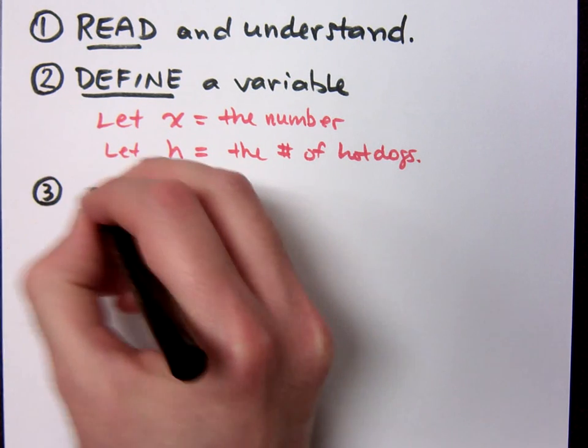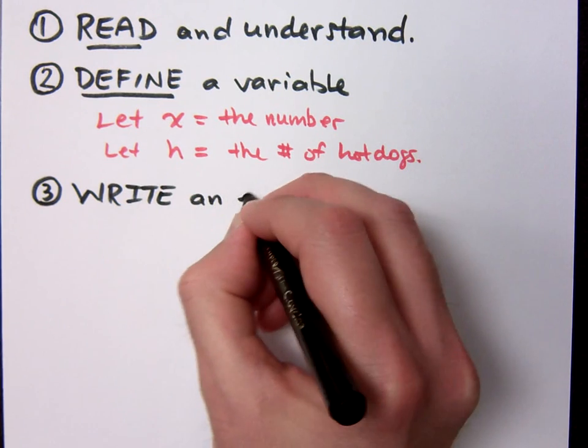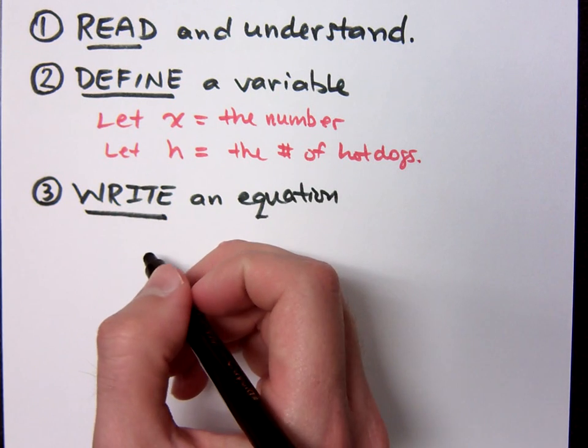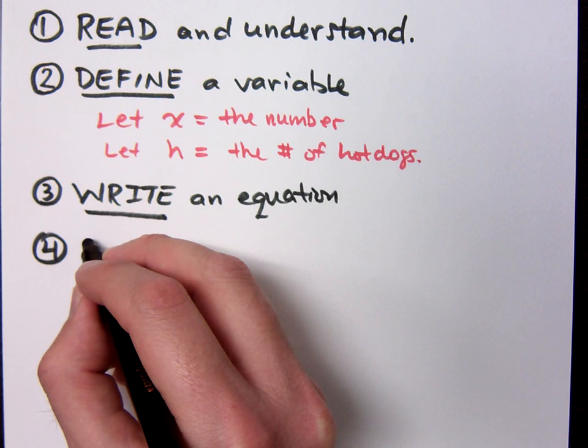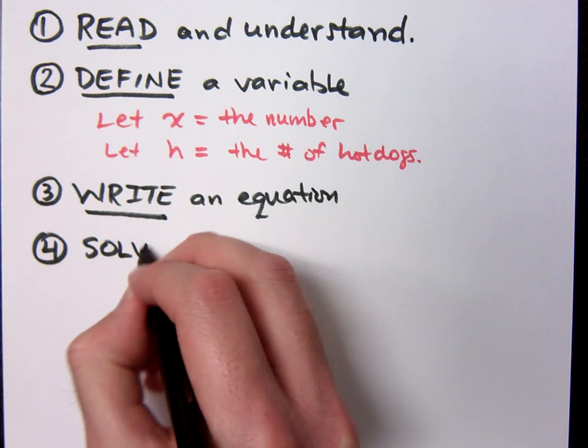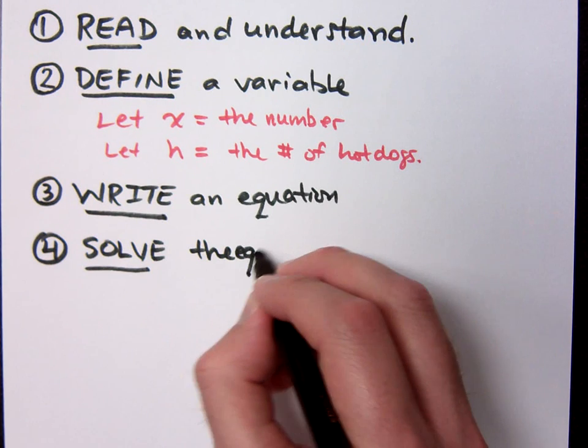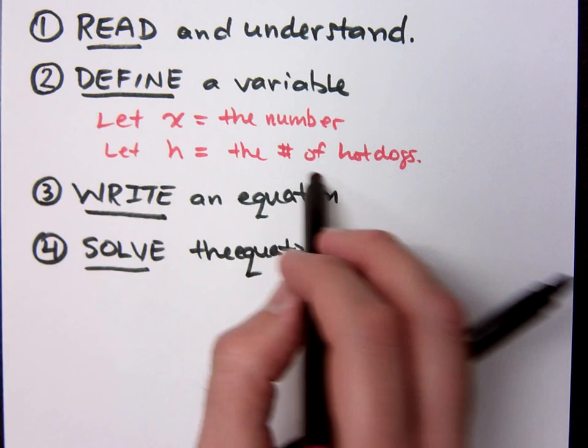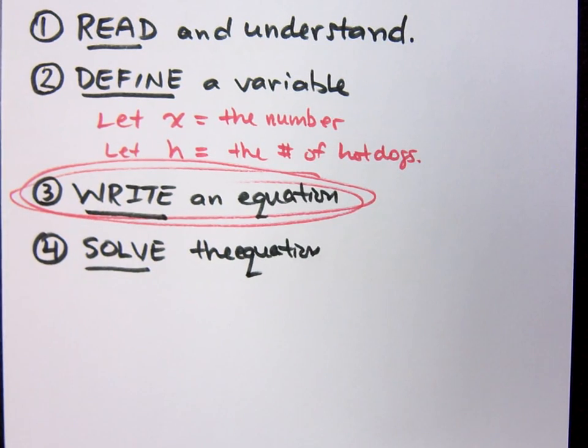Once you do all this, you then write an equation. And after you've written an equation, you can't even help yourself but to do what? Solve the equation. See, the most difficult step in all of this is writing an equation. This guy right here is the hardest thing to do in the class. Writing the equation. Because if you've written it, we already know how to solve it.